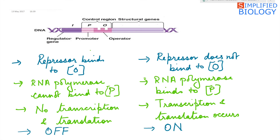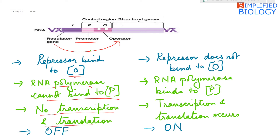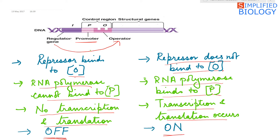Now, how does the operon operate? When the repressor binds to the operator, RNA polymerase cannot bind to the promoter. So if RNA polymerase doesn't bind to the promoter, there can be no transcription and no translation — the operon is off. When the repressor does not bind to the operator, RNA polymerase binds to the promoter, transcription and translation occur, and the operon is on.